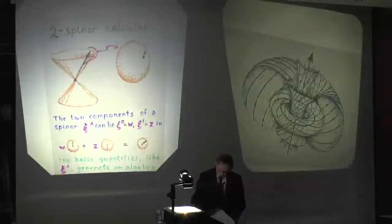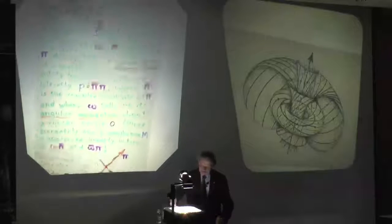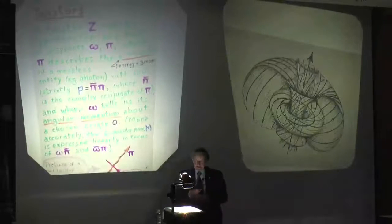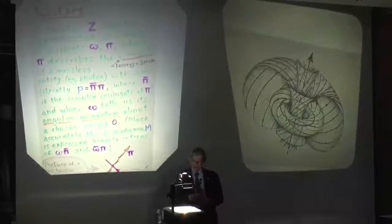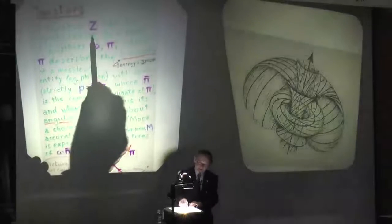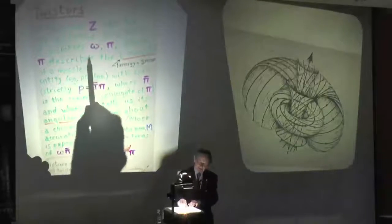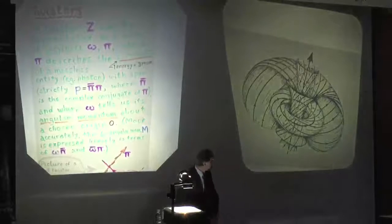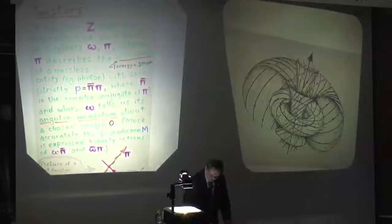What is a twister? Once you know what a spinner is, it tells you more what a twister is. You represent the spinner, and your twister Z is really two spinners. A spinner was this picture I just gave you — two spinners.